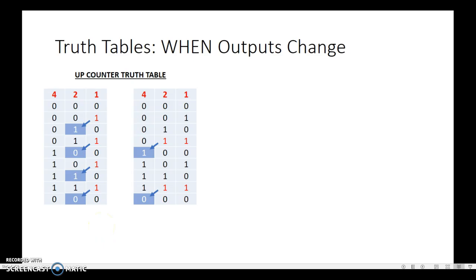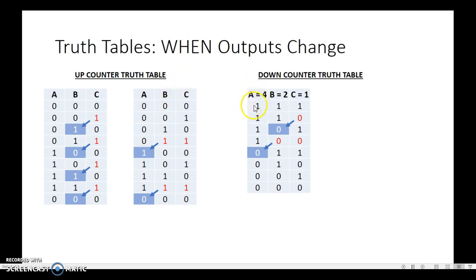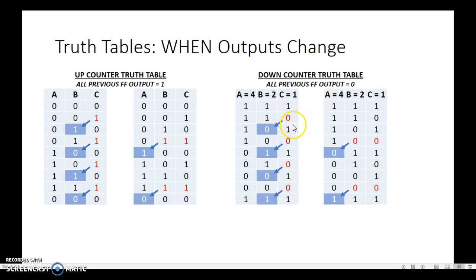If we want a down counter, then we need to count in reverse. A is 4, B is 2, and C is 1, which means we start with 1, 1, 1, and we count our way down until we get to 0, 0, 0. And if you pay special attention, you'll notice that 0 causes B to change in the next location. A 0 for C causes B to change.